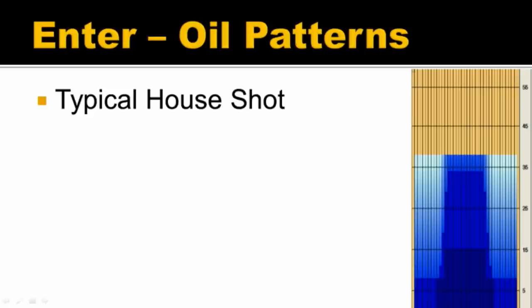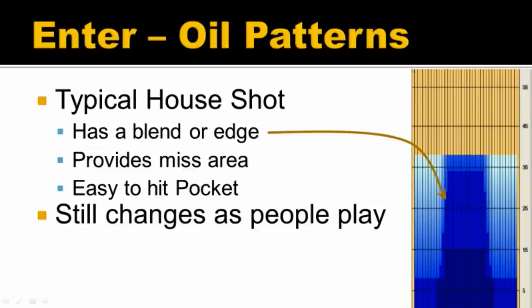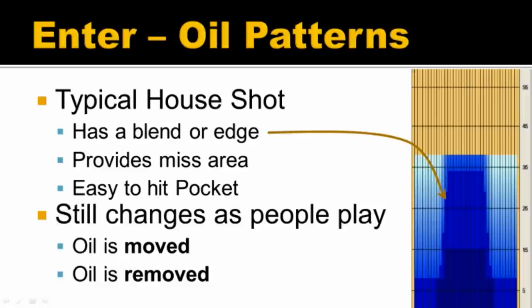The reason I'm going to look at the house shot is that everyone's familiar with it — it's the place where we all learn, and it's a good place to start. The house shot has a blender or an edge to it. You can see where there are different shades of blue on the graph. That blender edge provides a bit of miss area and makes it easy to hit the pocket — with oil in the centre of the lane and a bit of dry area to the outside, the bowling ball has a little bit of hold area if we miss inside and swing area if we miss outside. But even a shot like this still changes as people bowl on it, because oil is moved and removed, and that changes the way the lane plays.